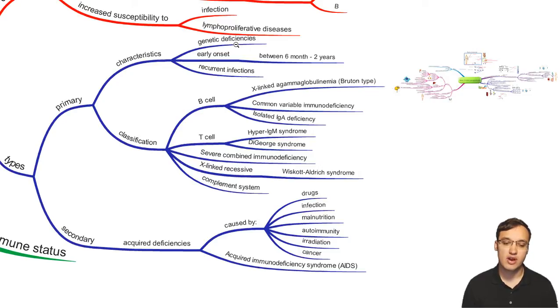Acquired ones are caused by, for example, cancer, irradiation, malnutrition, and so on. One example being acquired immunodeficiency syndrome, AIDS.